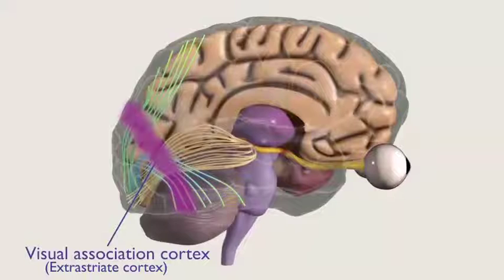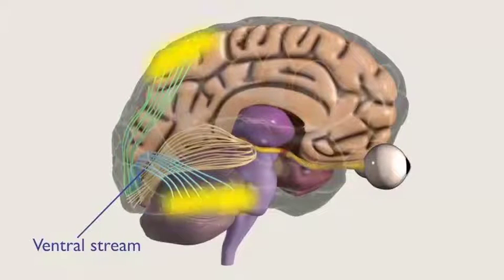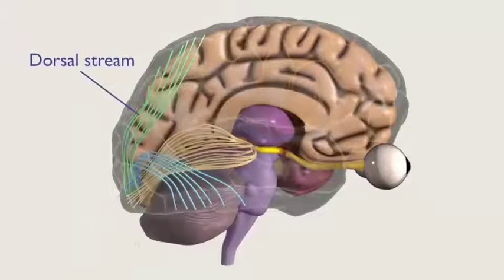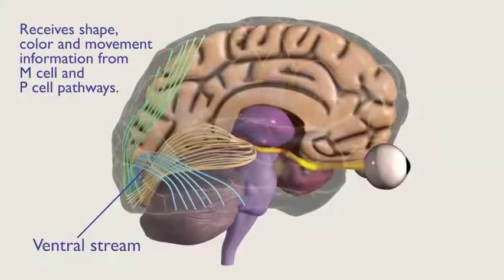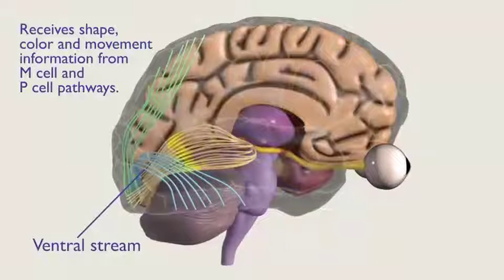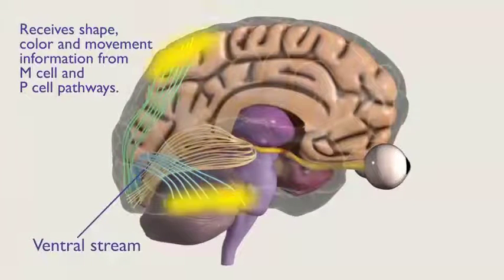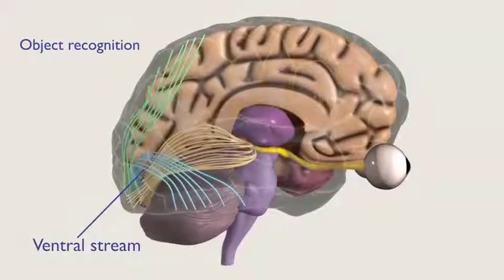Two additional components of the visual association cortex include the ventral stream, which is located in the temporal lobe, and the dorsal stream, which is located in the parietal lobe. The ventral stream receives shape, color, and movement information from M-cell and P-cell pathways. It is here that object recognition is processed.